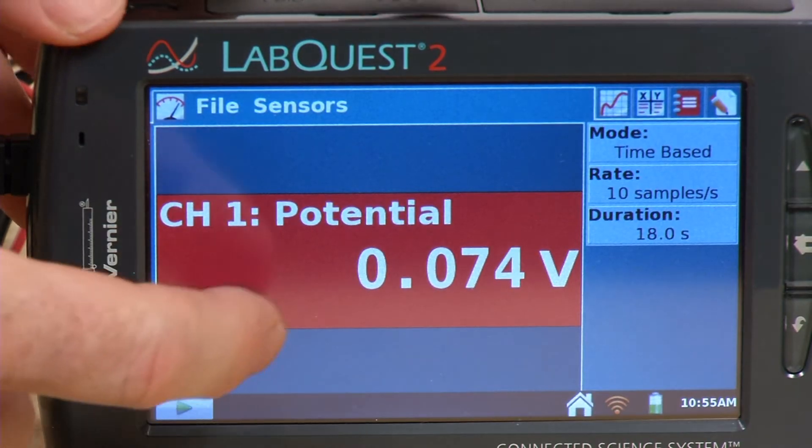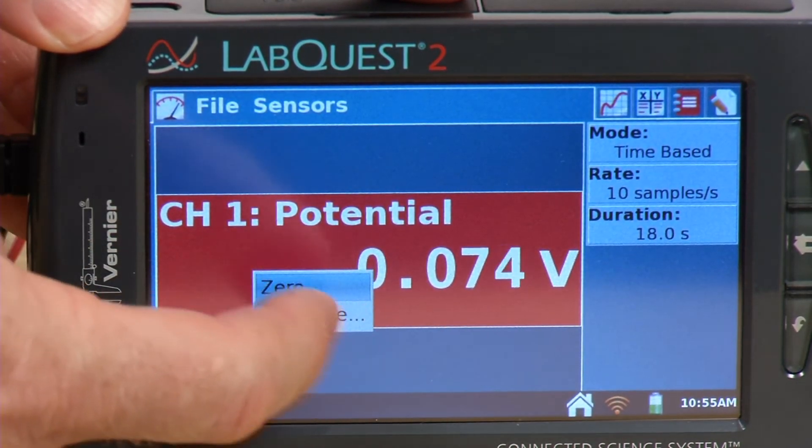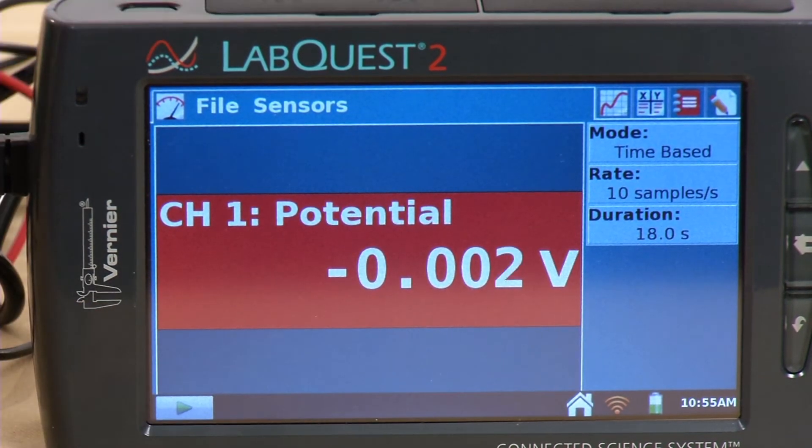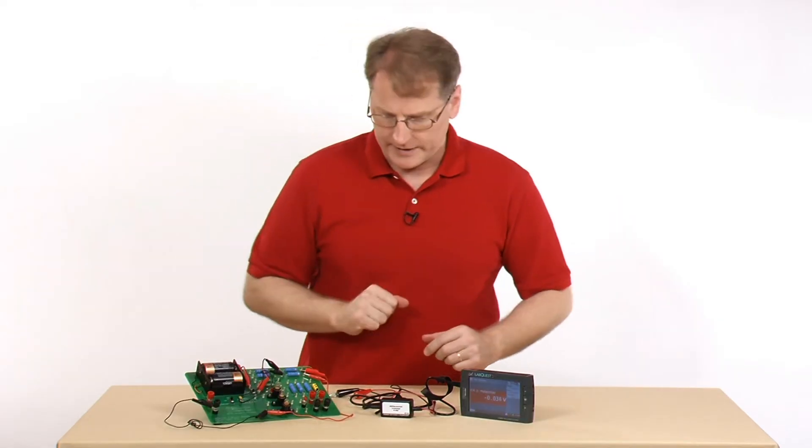One of the things that I can do is actually zero the sensor. So if I zero the sensor, it should be giving a value close to zero there. It's oscillating a little bit.